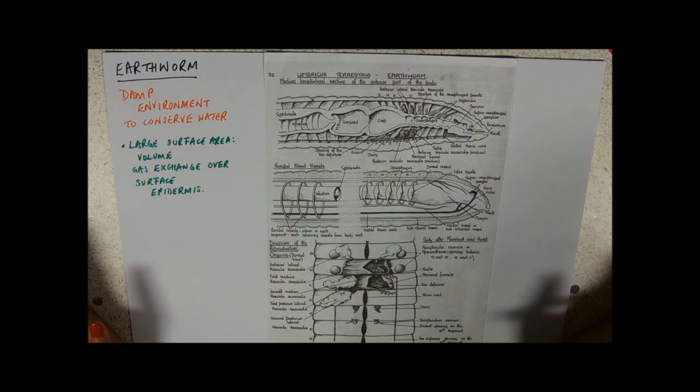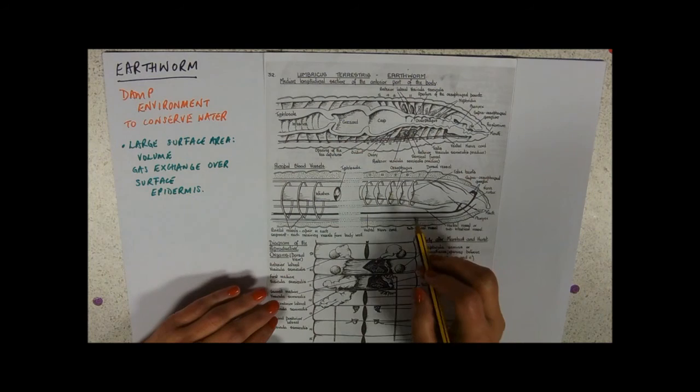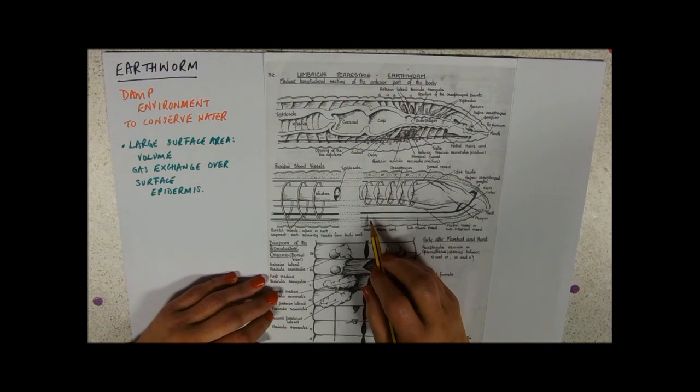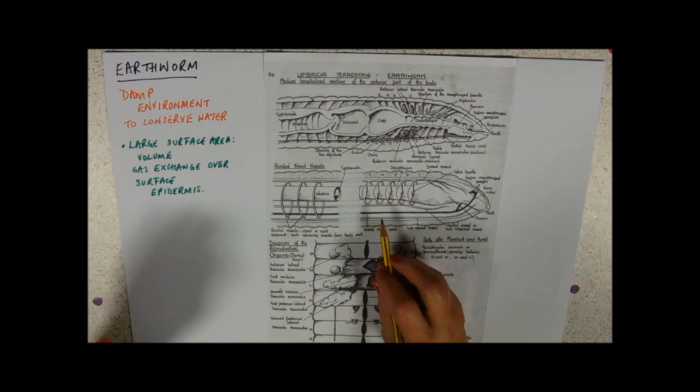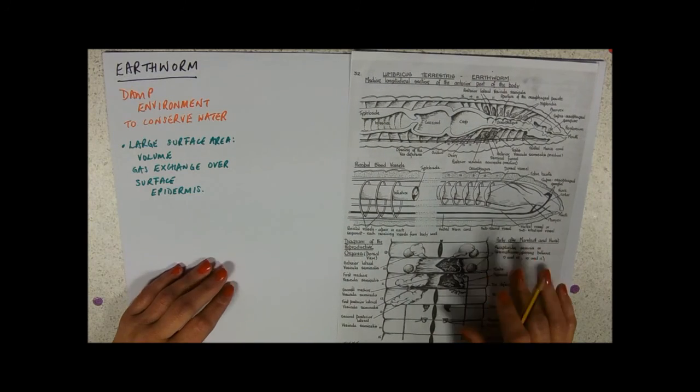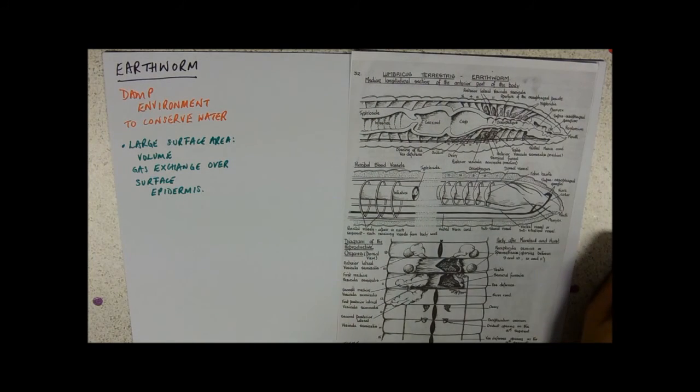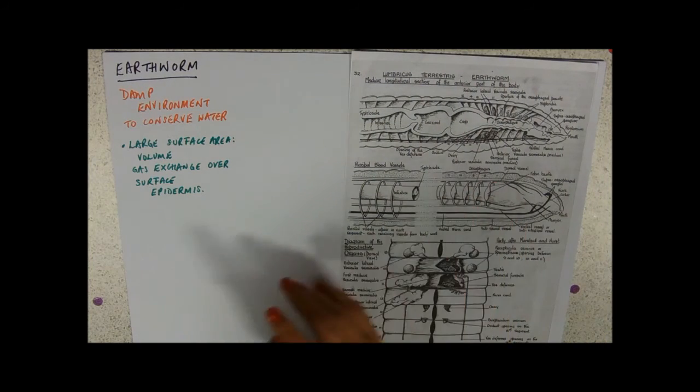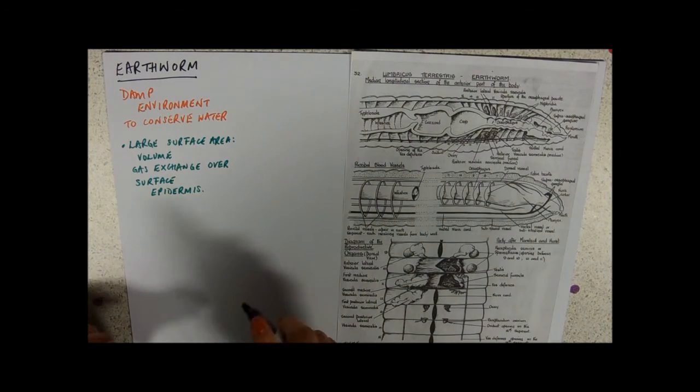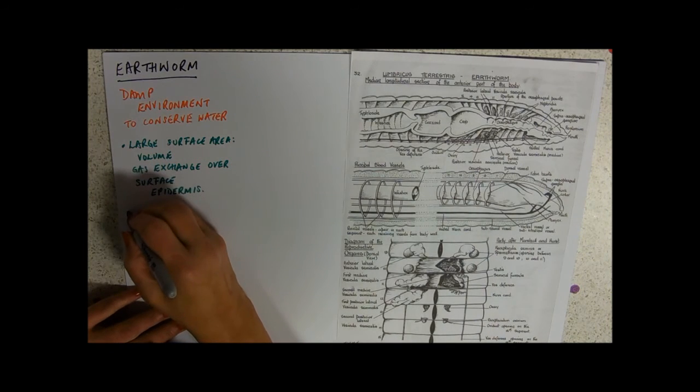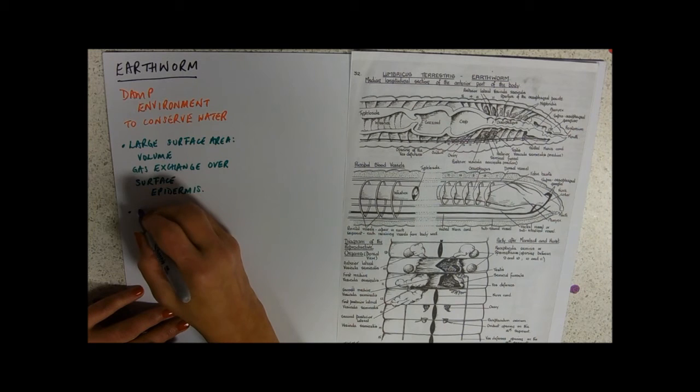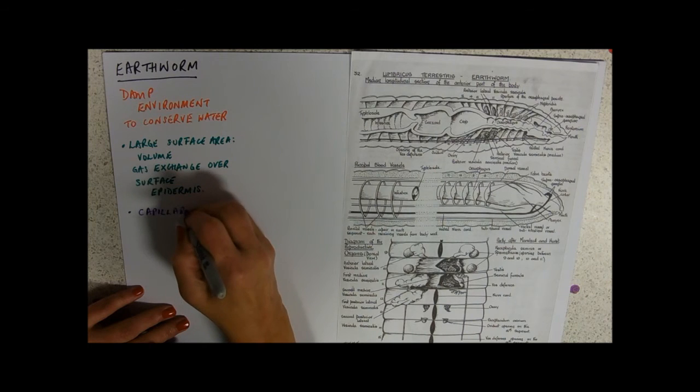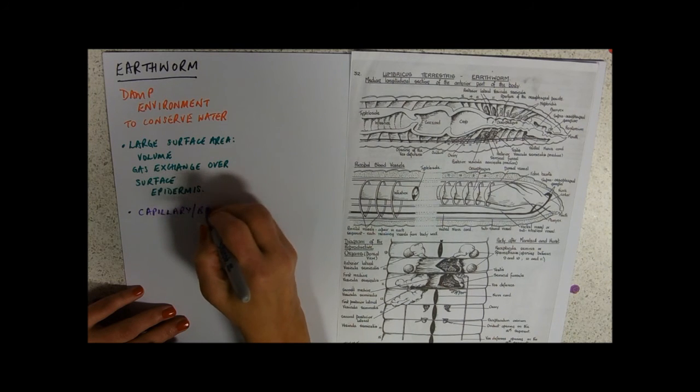And what you will notice when you do the dissection is that what's inside of these vessels is red. So we're certainly taking in our gases over the surface, but they're going directly—so we have close to the surface a blood supply.